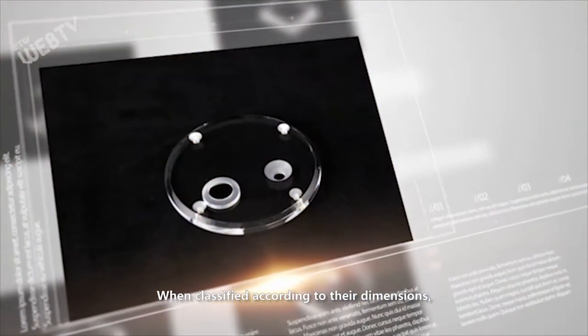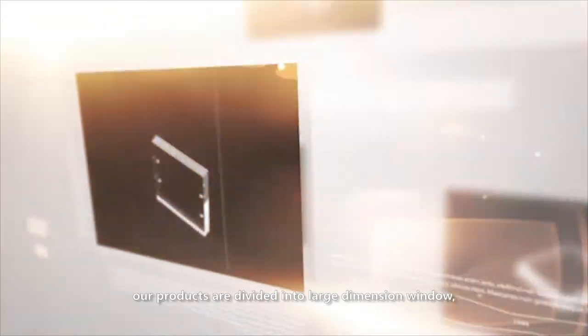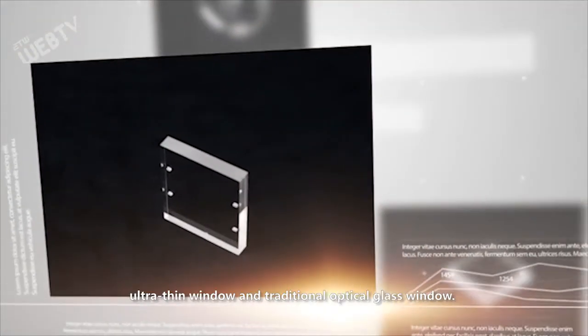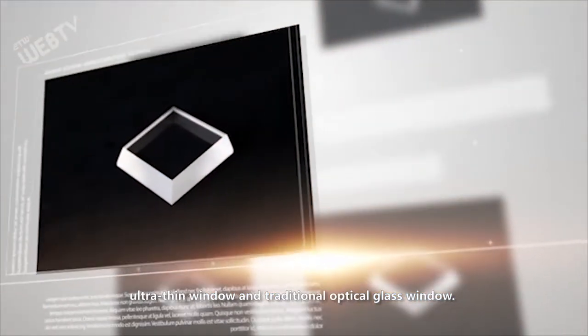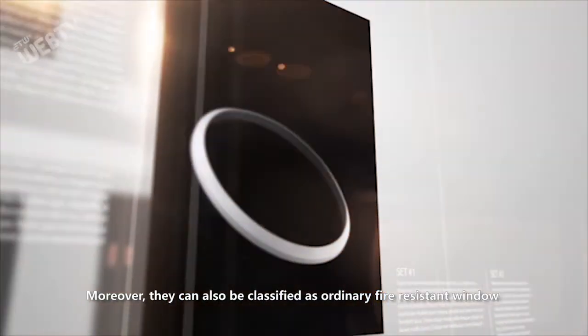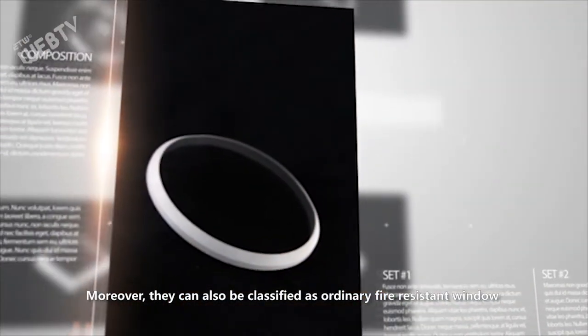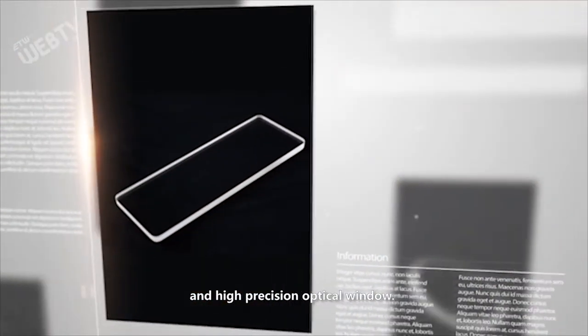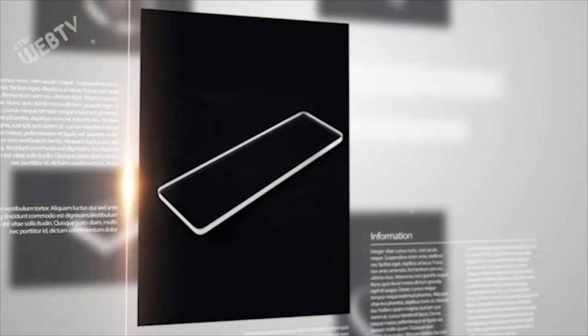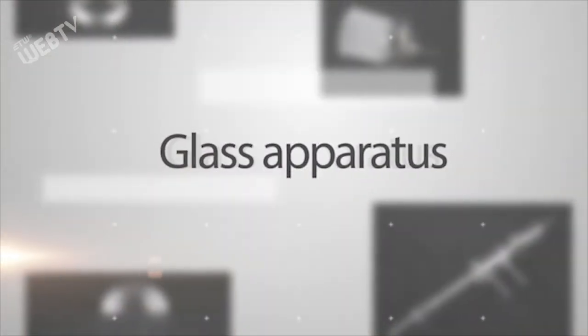When classified according to their dimensions, our products are divided into large dimension window, ultra thin window, and traditional optical glass window. Moreover, they can also be classified as ordinary fire resistant window and high precision optical window.